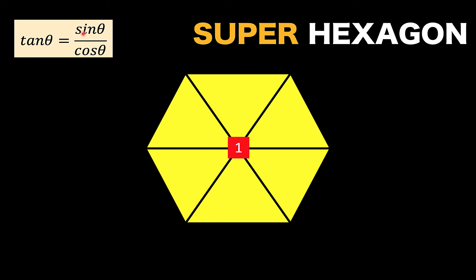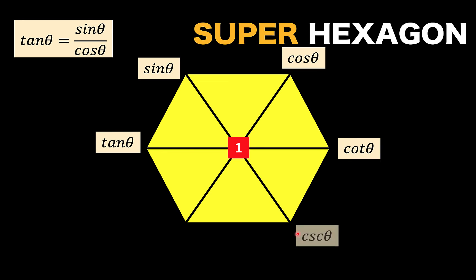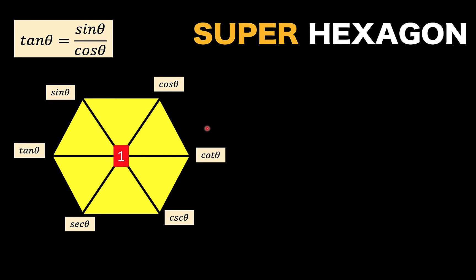We are going to position the three trigonometric functions in the hexagon this way: put tangent theta here, next is sine theta, and the third is cosine theta. Opposite tangent is the cotangent, so we put cotangent theta there. If we divide the super hexagon into two hemispheres, the right side contains all trigonometric functions starting with the letter C, so we put cosecant and secant theta in the remaining slots. We have just constructed our super hexagon.